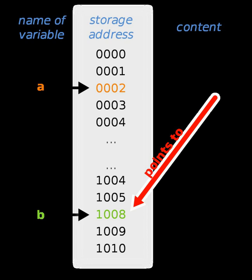Pointers can also be used to allocate and deallocate dynamic variables and arrays in memory. Since a variable will often become redundant after it has served its purpose, it is a waste of memory to keep it, and therefore it is good practice to deallocate it using the original pointer reference when it is no longer needed. Failure to do so may result in a memory leak where available free memory gradually, or in severe cases rapidly, diminishes because of an accumulation of numerous redundant memory blocks.